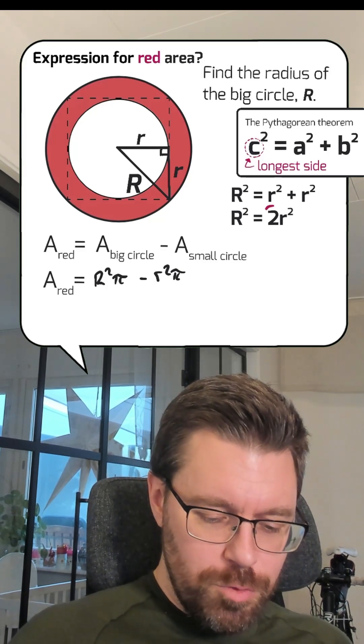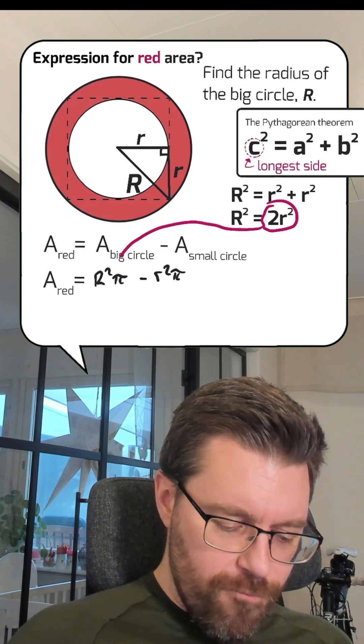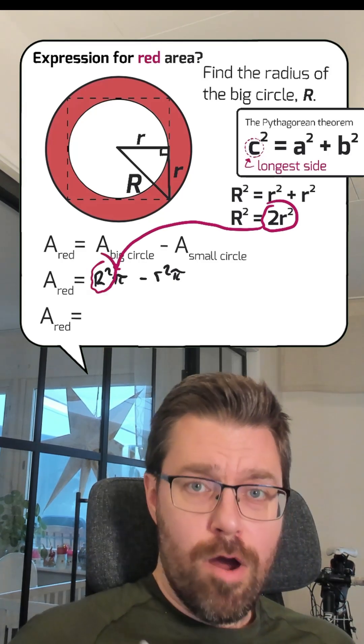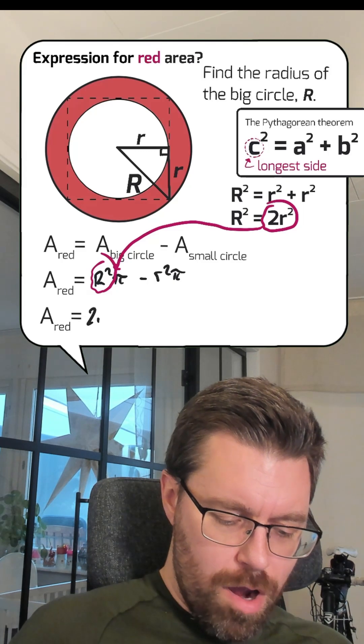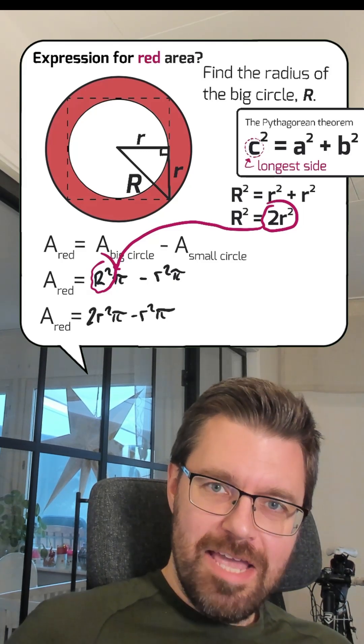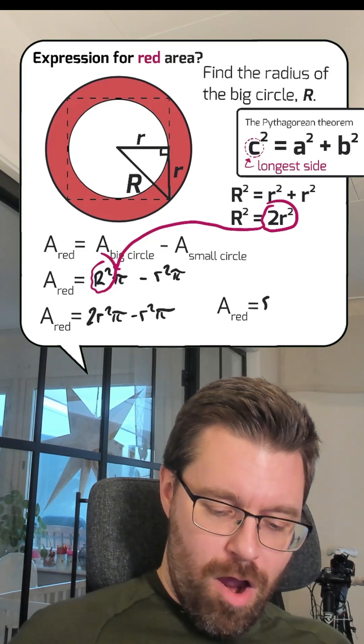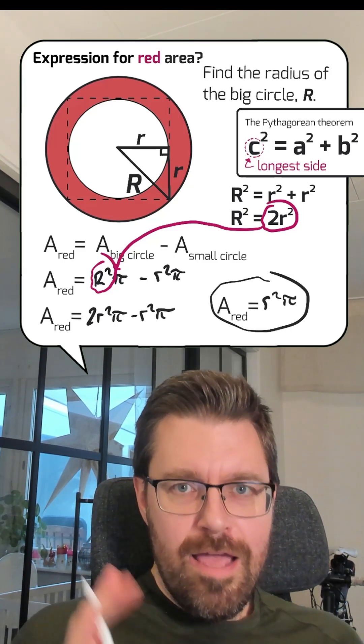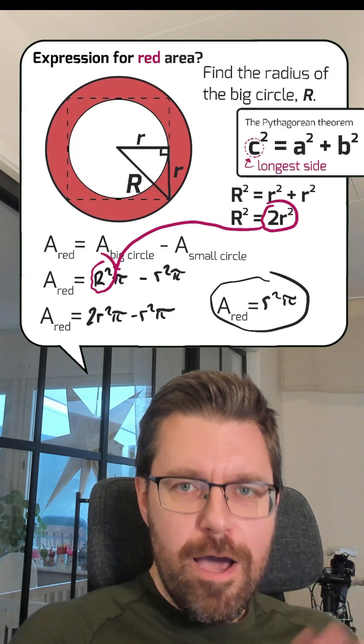And then we can put 2r squared instead of big R squared below here. And then we've got area of the red is 2r squared pi minus r squared pi. If you take and look at it, it only means that it is r squared pi. The area of the red is exactly as big as the area of the white circle.